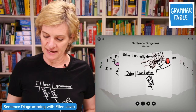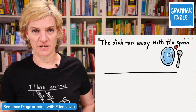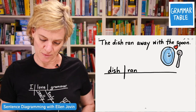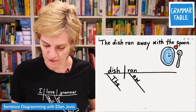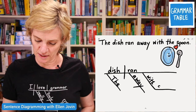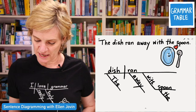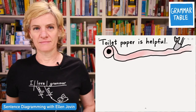Here, 'the dish ran away with the spoon.' Dish is the subject and ran is the verb. Away we can treat as an adverb and put it below. Then we have the prepositional phrase 'with the spoon' — with is the preposition, spoon is the object, and 'the' goes below. Let's make sure we have all the words: the dish, big line, ran, away is the adverb, with the spoon. We are ready for a new and exciting element.